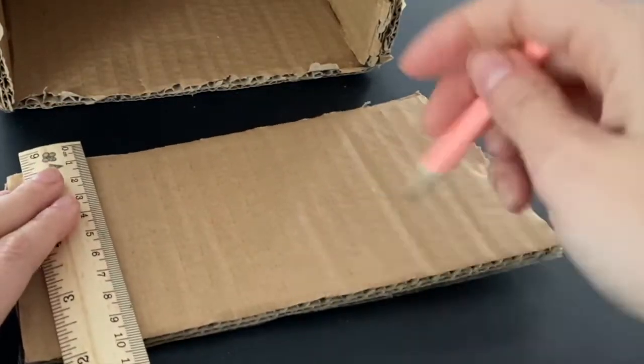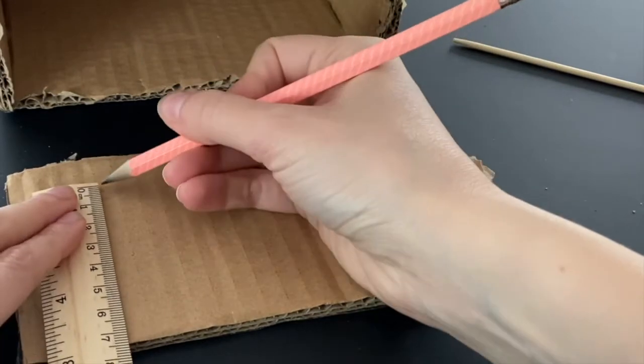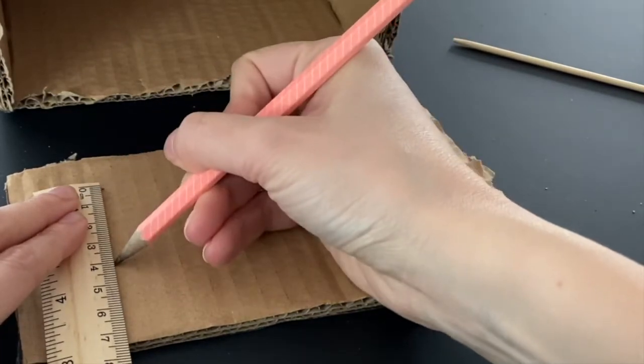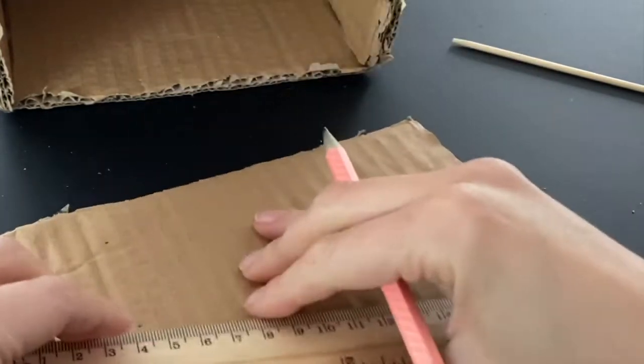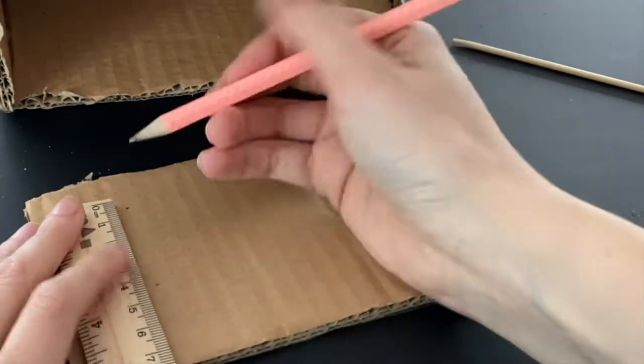Now it's time to prepare our cams. I'm going to draw on a piece of cardboard a circle with a diameter of 4 centimeters.